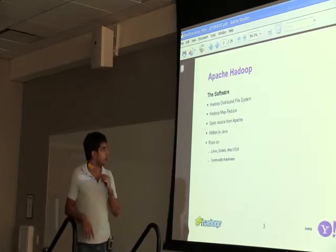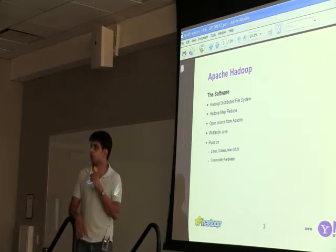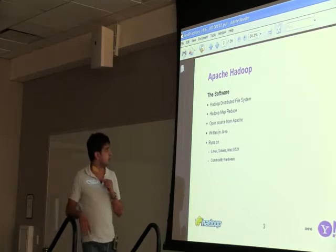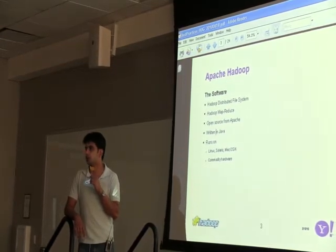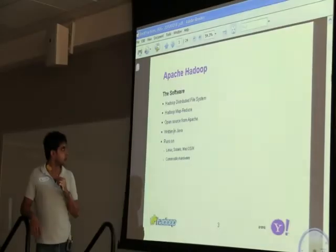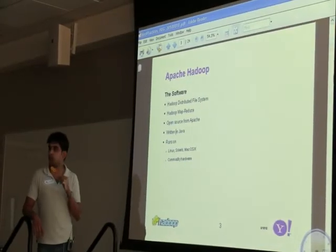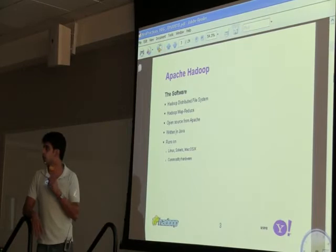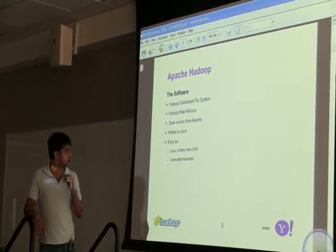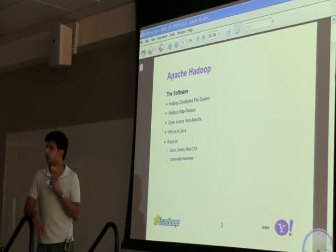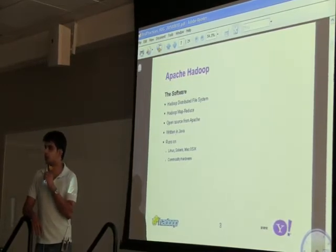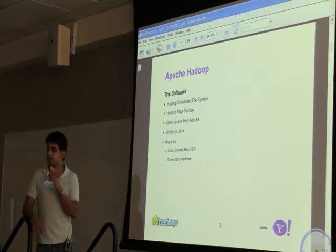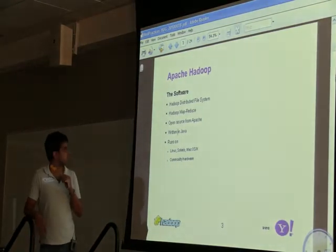Basically, I'm going to run through this very quickly. This is just a quick overview of Apache Hadoop — what it is. Most people here know that. We have two main components: the file system and the MapReduce framework. The file system is very good storage. MapReduce is very good compute. It's written in Java, it's open-sourced under the Apache software license. It runs on Linux, Solaris, Mac, and I believe it still runs on Cygwin.